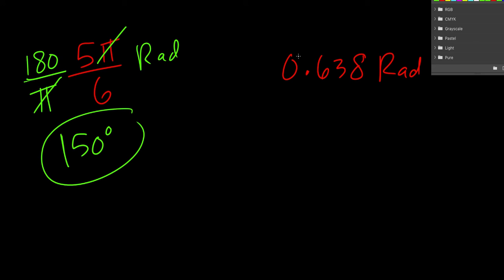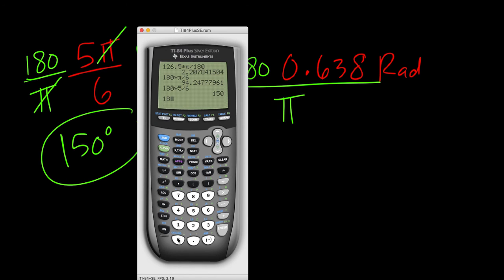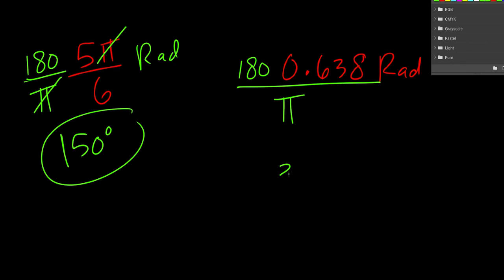Okay, similar process. We're going to say 180 over π. This time there's not a π to cancel, but we still want to kind of think of it in that way. Then we just plug this in: 180 times 0.638, divide that by π. And we get 36.6 if we round to three significant figures.